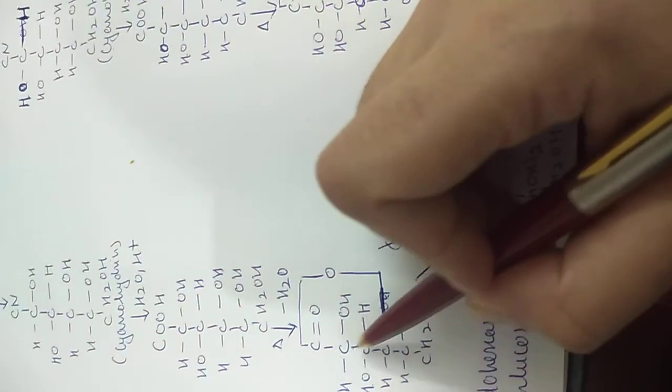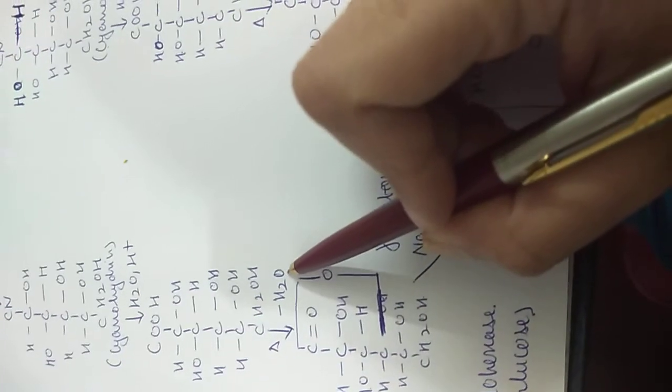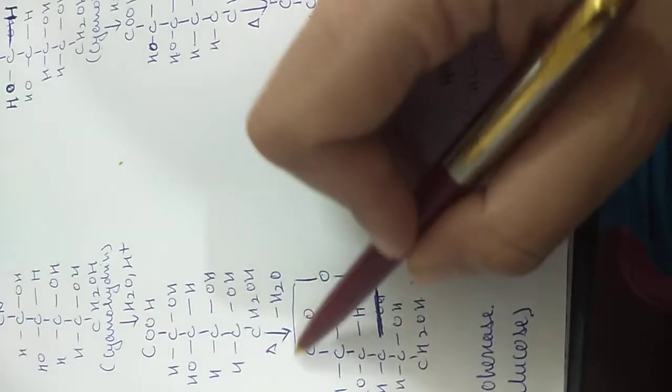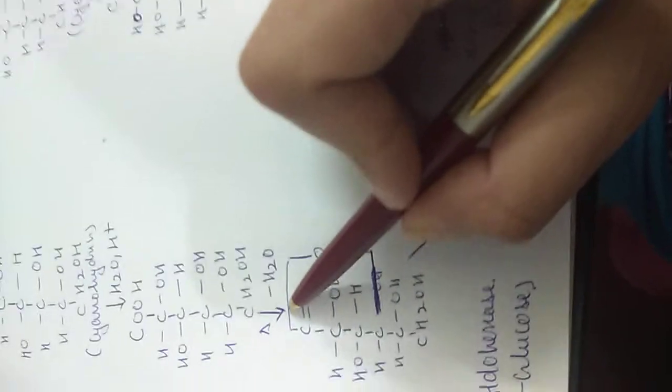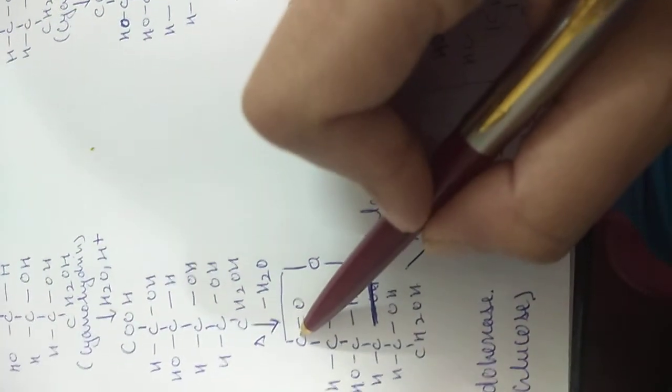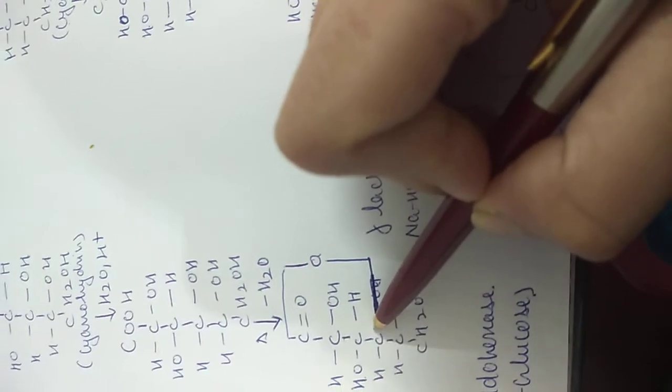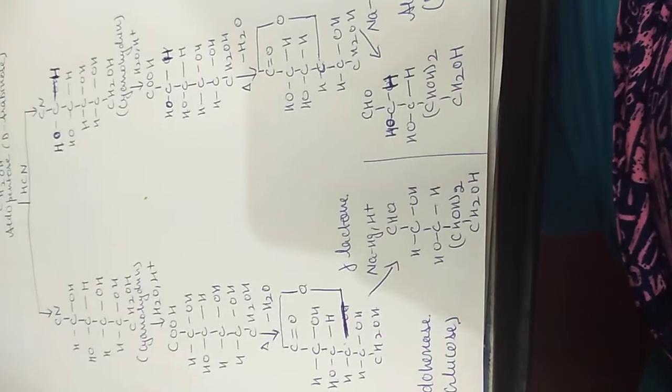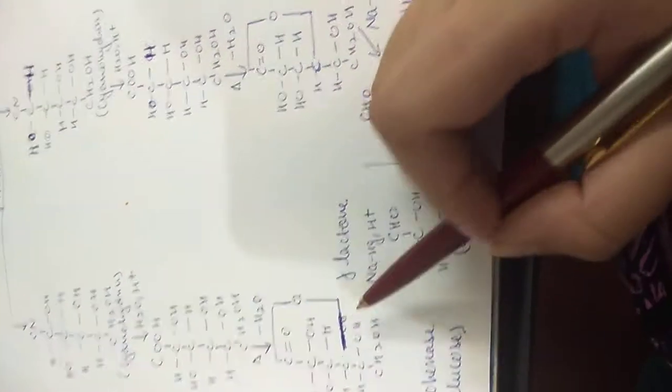Then we apply heat, and there will be removal of water — loss of a water molecule. This results in the formation of a bridge of oxygen between carbon number one and carbon number four, forming a lactone ring on both sides. The rest of the structure remains the same.